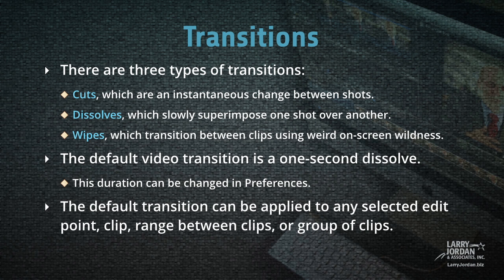Once our trimming is done, we need to move on to transitions. There are three types of transitions: cuts, dissolves, and wipes. Cuts are an instantaneous change between shots. Dissolves slowly superimpose one shot over another. Wipes are a transition between clips using on-screen wildness. The default video transition is a one-second dissolve, and this duration can be changed in Preferences. The default transition can be applied to any selected edit point, a clip, a range between clips, or a group of clips.